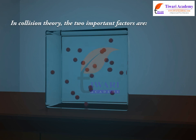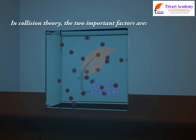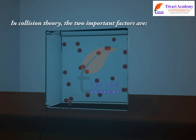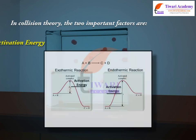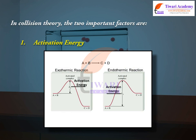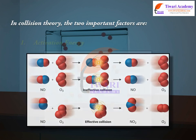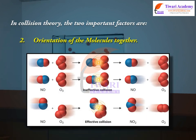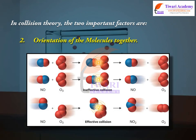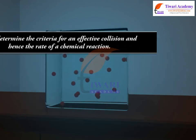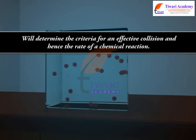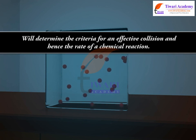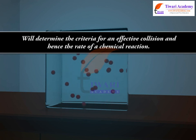In collision theory, the two important factors are: 1. Activation energy, and 2. Orientation of the molecules. Together these determine the criteria for an effective collision and hence the rate of a chemical reaction.